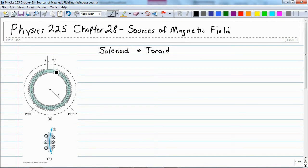And so, as we had with a solenoid, there is no magnetic field outside of a toroid because all of the magnetic field is contained inside of the solenoid or the toroid.